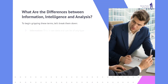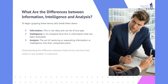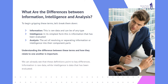What are the differences between information, intelligence, and analysis? To begin gripping these terms, let's break them down. Information is raw data and can be of any type. Intelligence, in its simplest form, is information that has been evaluated. Analysis is the act of resolving or separating information or intelligence into their component parts.